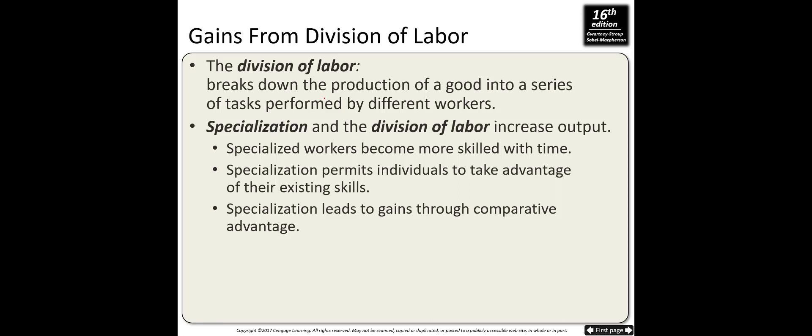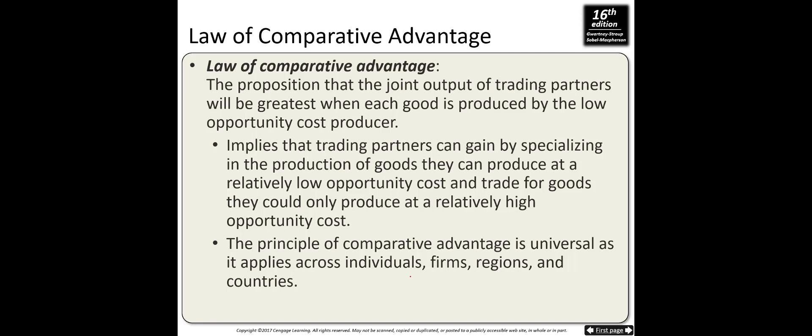Next, we talk about trade, output, and living standards. We gain from trade because of division of labor and specialization. For example, you go to college to become an accountant. You earn a wage and trade that salary with others to buy what you need — you don't grow your own vegetables or fix your own clothes. Specialized workers become more skilled over time, and specialization allows individuals to take advantage of their existing skills.